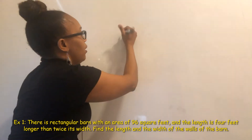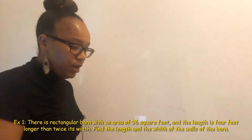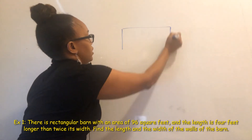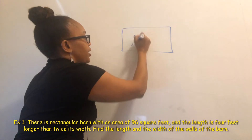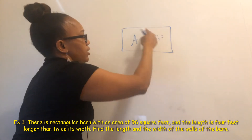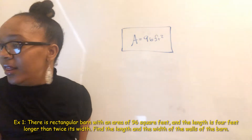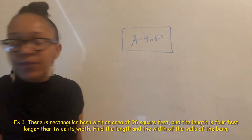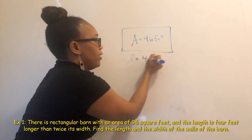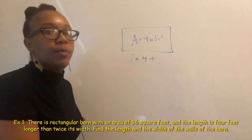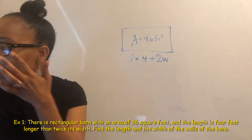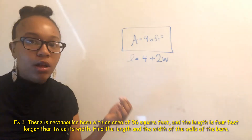We have a rectangular barn. The area of it is 96 square feet. Area represents the measurement of the inside. It says that its length is four feet longer than twice its width, so the length is four plus two times the width W. And it wants us to find the length and the width of the wall of the barn.